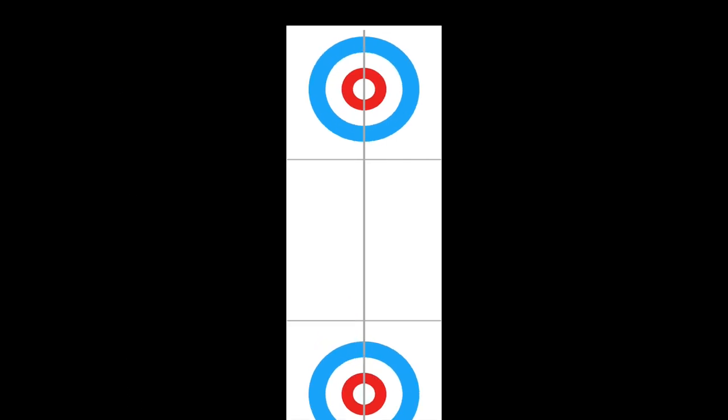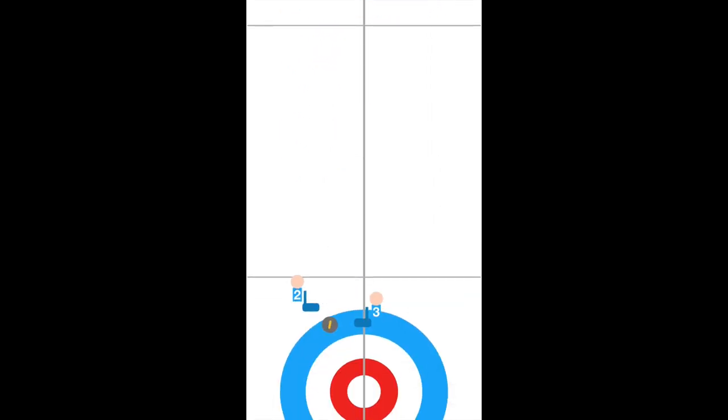At the start of a typical curling match, you'll see the lead and the rock at one end of the sheet, and you'll find the second and the third waiting with brooms to sweep. The lead will throw the rock, and the second and the third will wait for the skip to tell them to start sweeping.